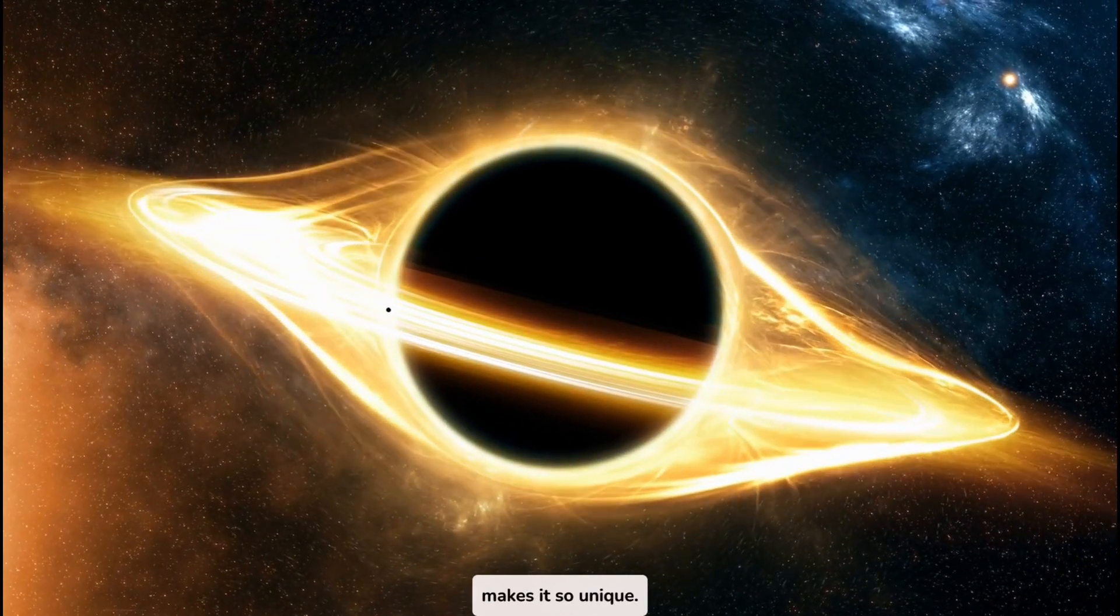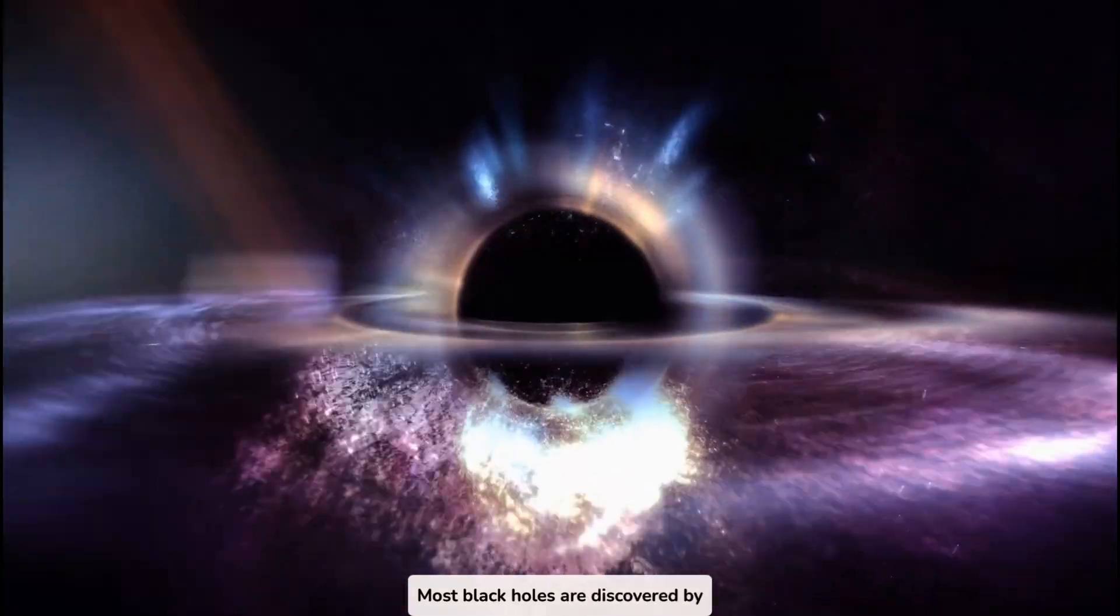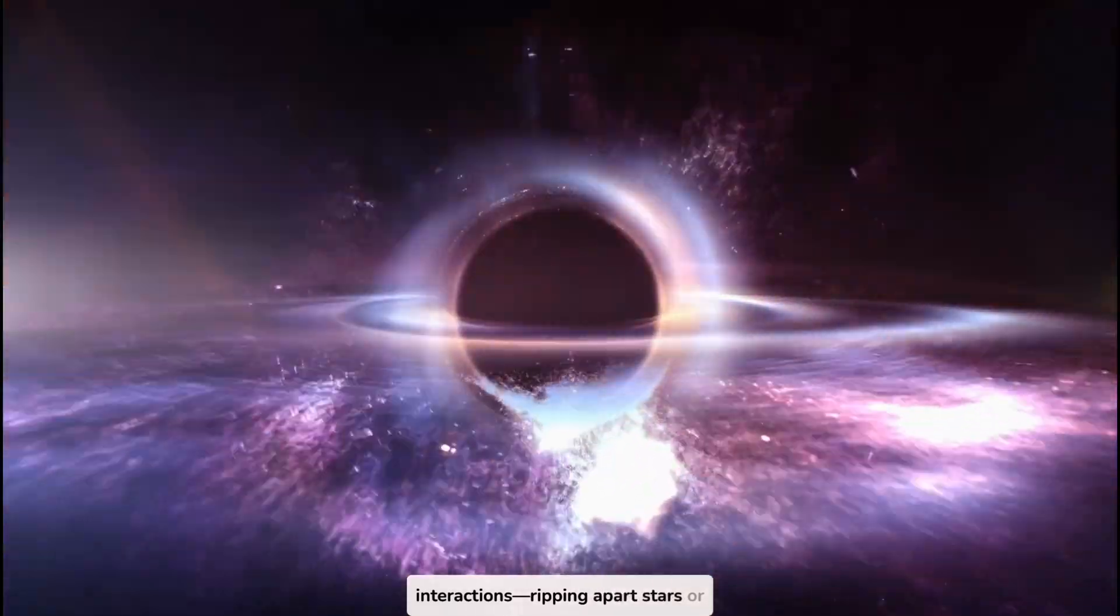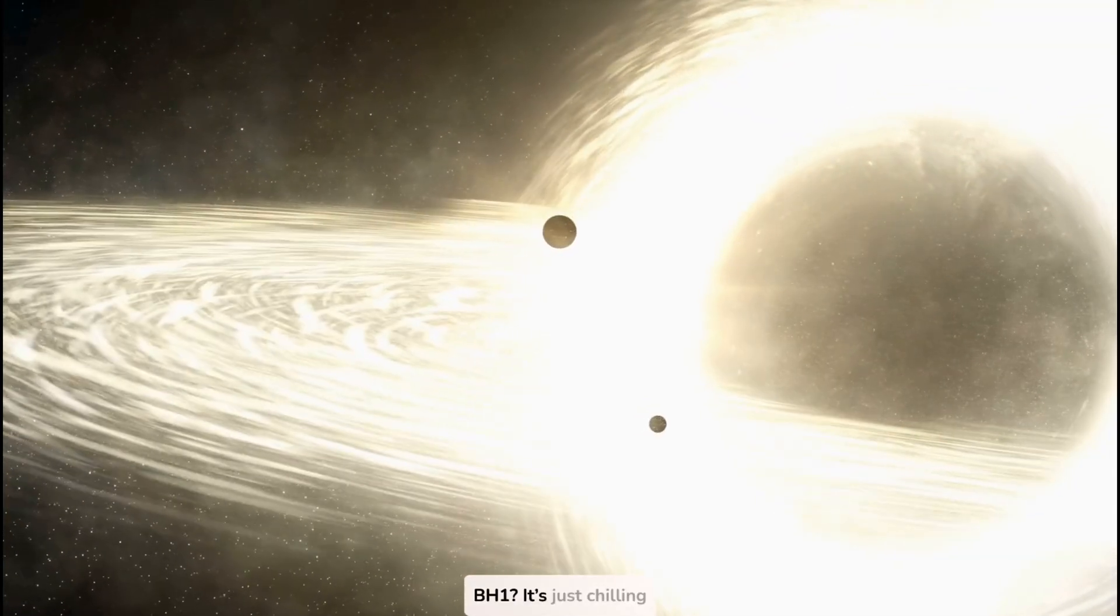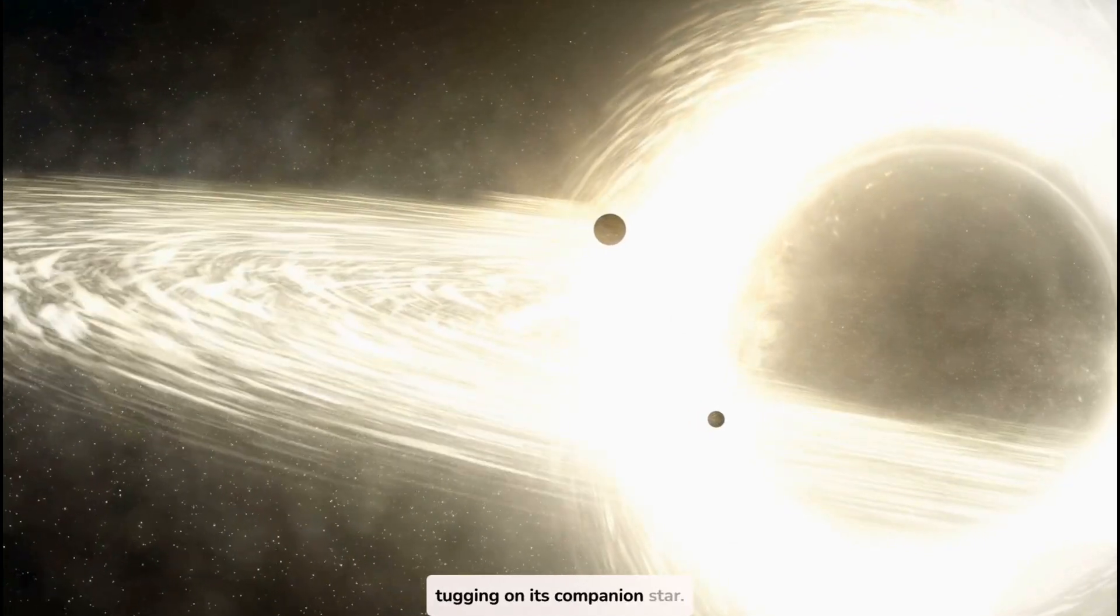This is what makes it so unique. Most black holes are discovered by their violent interactions, ripping apart stars or swallowing gas clouds. But Gaia BH1? It's just chilling in the dark, quietly tugging on its companion star.